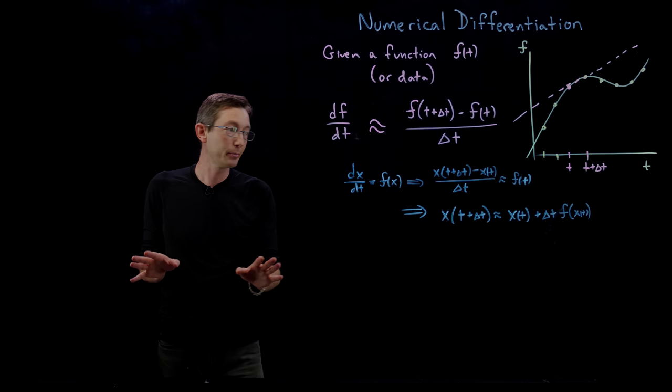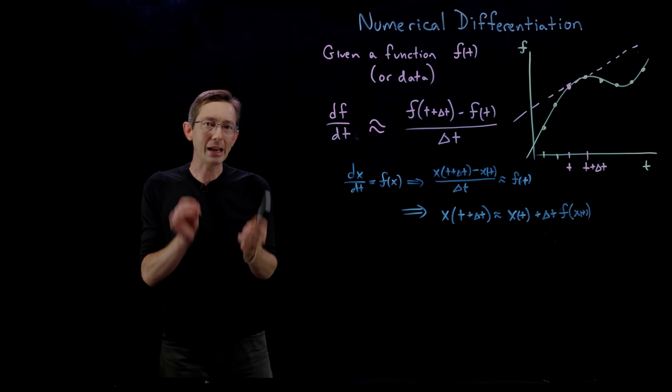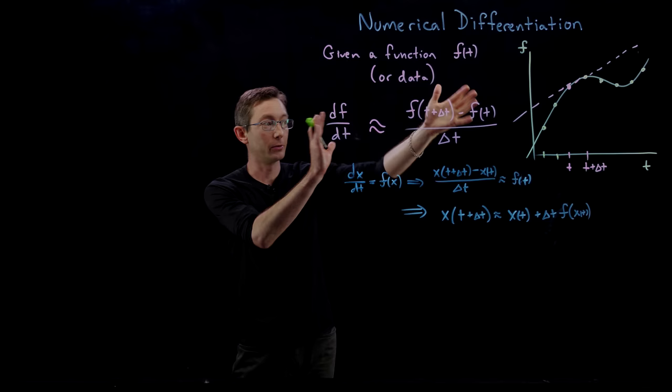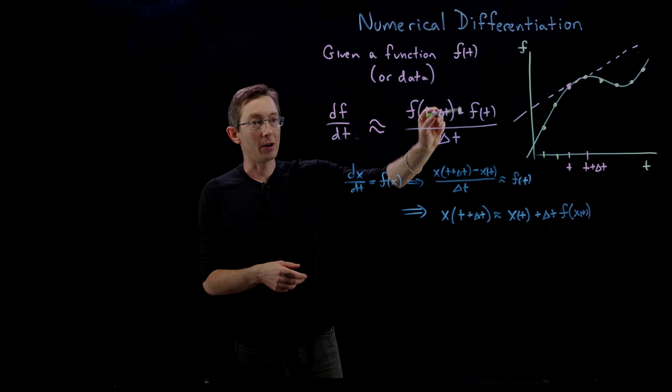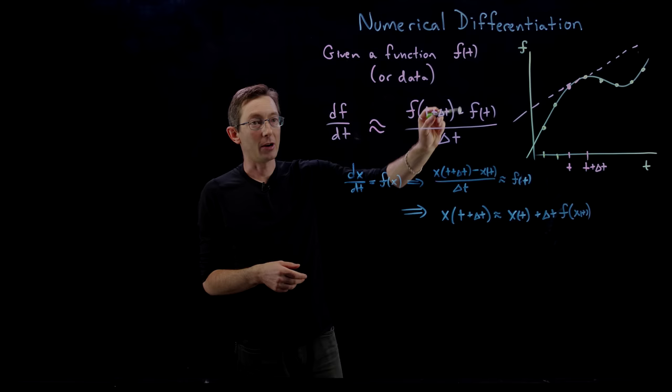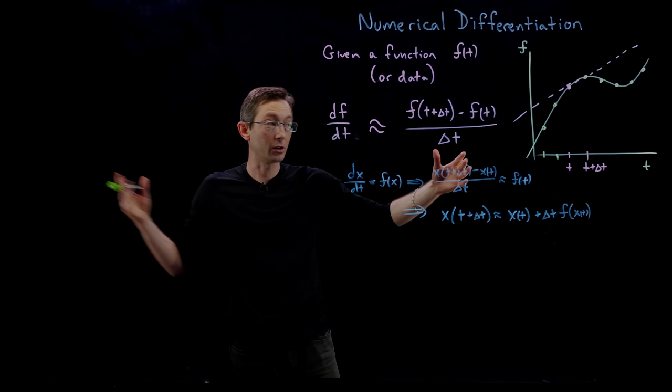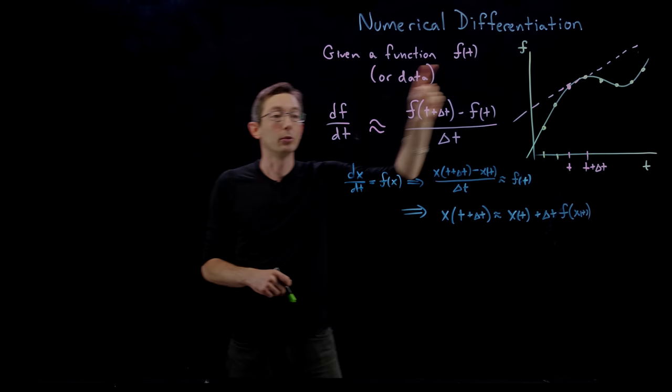Let's jump in. The basic way we're going to understand the error of these approximations is by looking at the Taylor series expansion of f(t + Δt) about a base point f(t). We're going to expand this out, get a bunch of terms, and then see how the full expansion relates to this derivative.